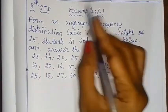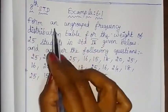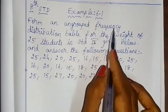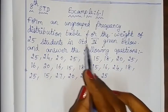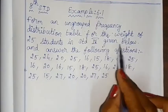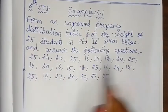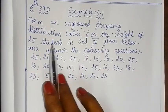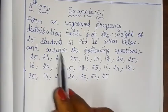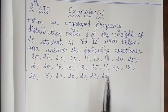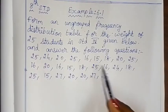Hello children! Let me see Example 6.1. Form an ungrouped frequency distribution table for the weight of 25 students in Standard 4 as given below and answer the following questions. Now, if you have 25 students, they will check the weight and show you the data, and we will show you a tabular column form.